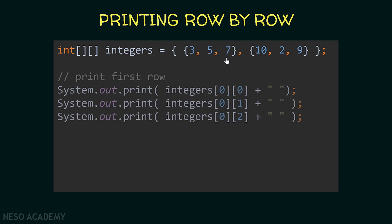But before that let's have a look over here. To print the first row we will do something like this. I'm using the print method and first of all I'm printing integers[0][0], so I'm printing the first element of the first row, then the second element, and finally the third element. As you can see, the index of the row is fixed at zero and the index of the column is changing from zero until two.